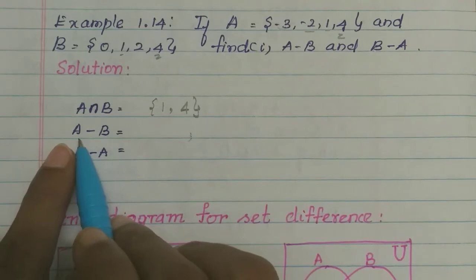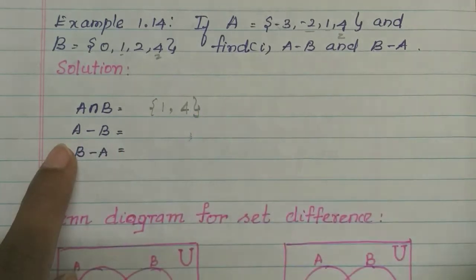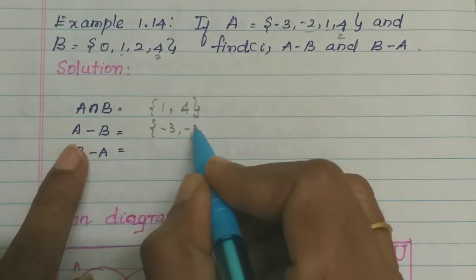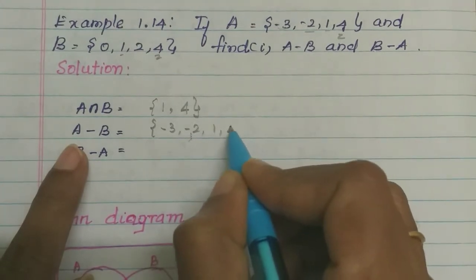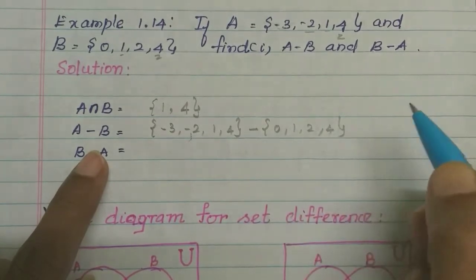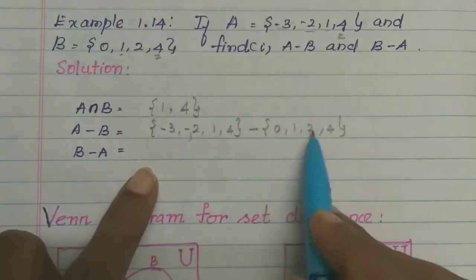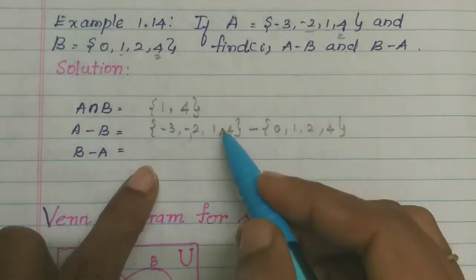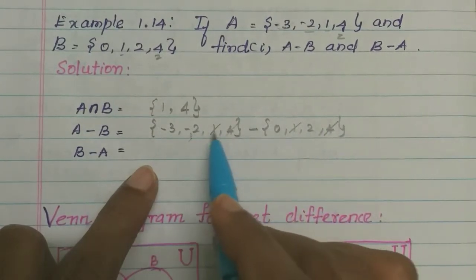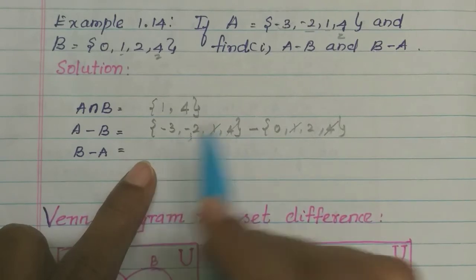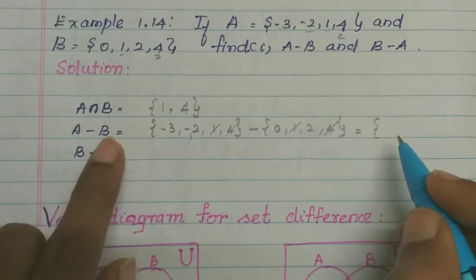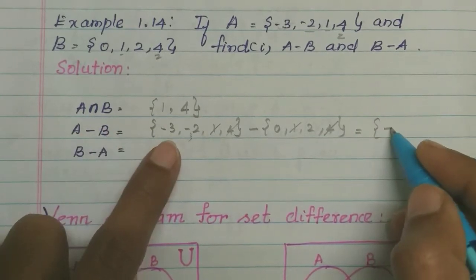To find A minus B, we take A and B and remove the common elements. A is equal to {-3, -2, 1, 4} and B is equal to {0, 1, 2, 4}. We cancel the common elements: 1 is common and 4 is common. The remaining elements of A are minus 3 and minus 2. So A minus B is equal to {-3, -2}.